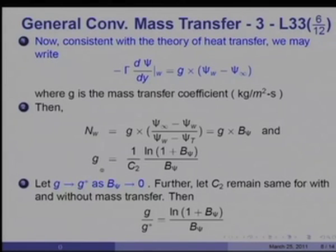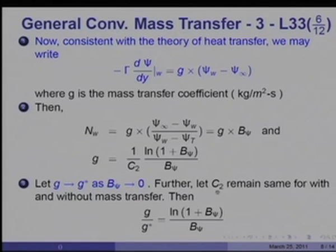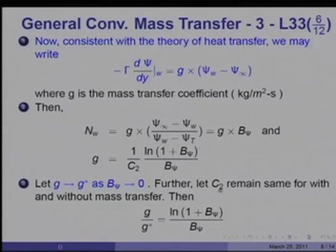Assuming as B_psi tends to zero, g tends to G-star — the mass transfer coefficient at zero blowing — and assuming C2 remains constant with or without mass transfer (exactly true for laminar boundary layer, and approximately valid for turbulent), it follows that g over G-star equals ln(1 plus B_psi) divided by B_psi. This is a very important result.